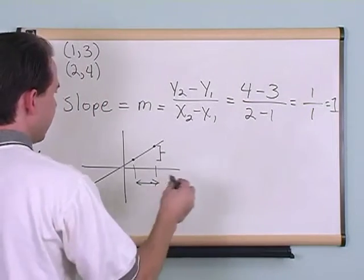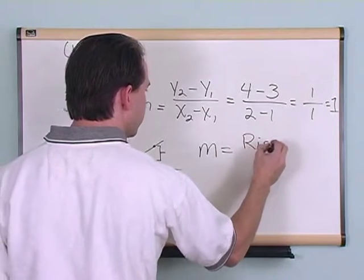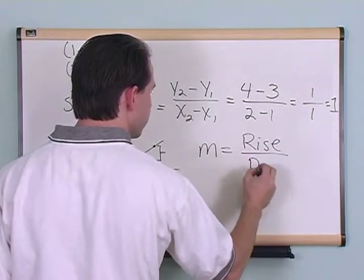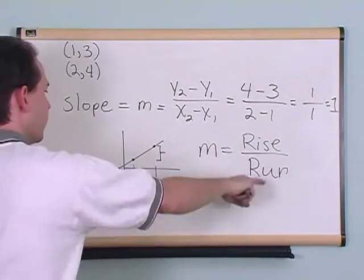Another really convenient way to remember this formula: m is equal to rise over run. How fast does the line go up, rise? How fast does it go over, run?